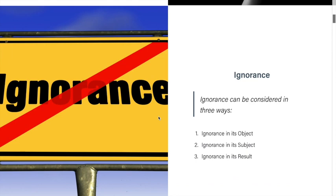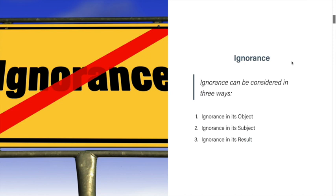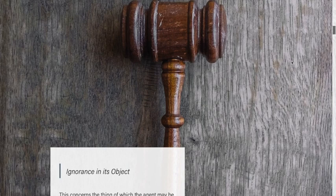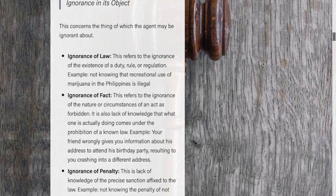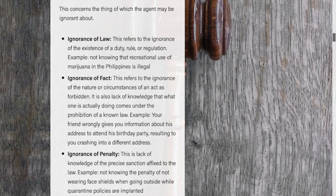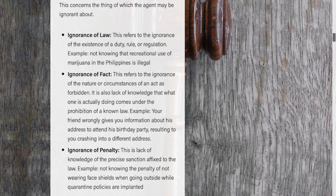Ignorance can also be considered in three ways: ignorance in its object, ignorance in its subject, and ignorance in its result. Ignorance in its object concerns the thing about which the agent may be ignorant. It comes in three types: ignorance of law, ignorance of fact, and ignorance of penalty. Ignorance of law refers to ignorance of the existence of a duty, rule, or regulation — whether moral or civil. For example, not knowing that recreational use of marijuana in the Philippines is illegal.